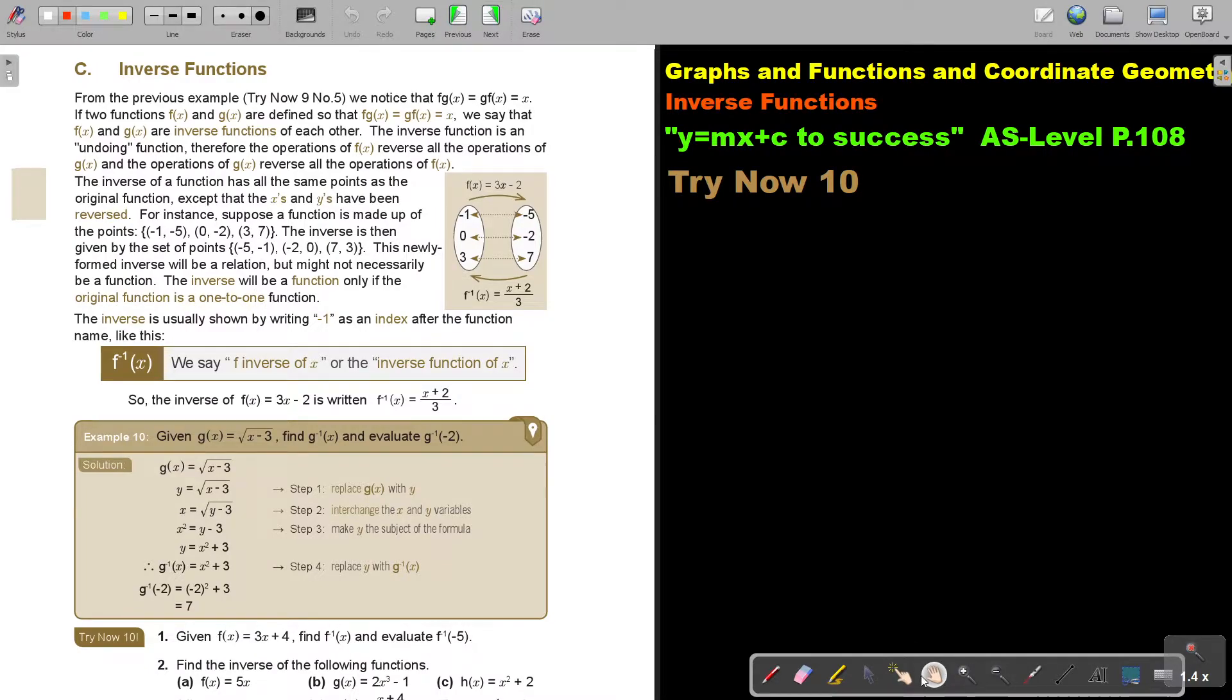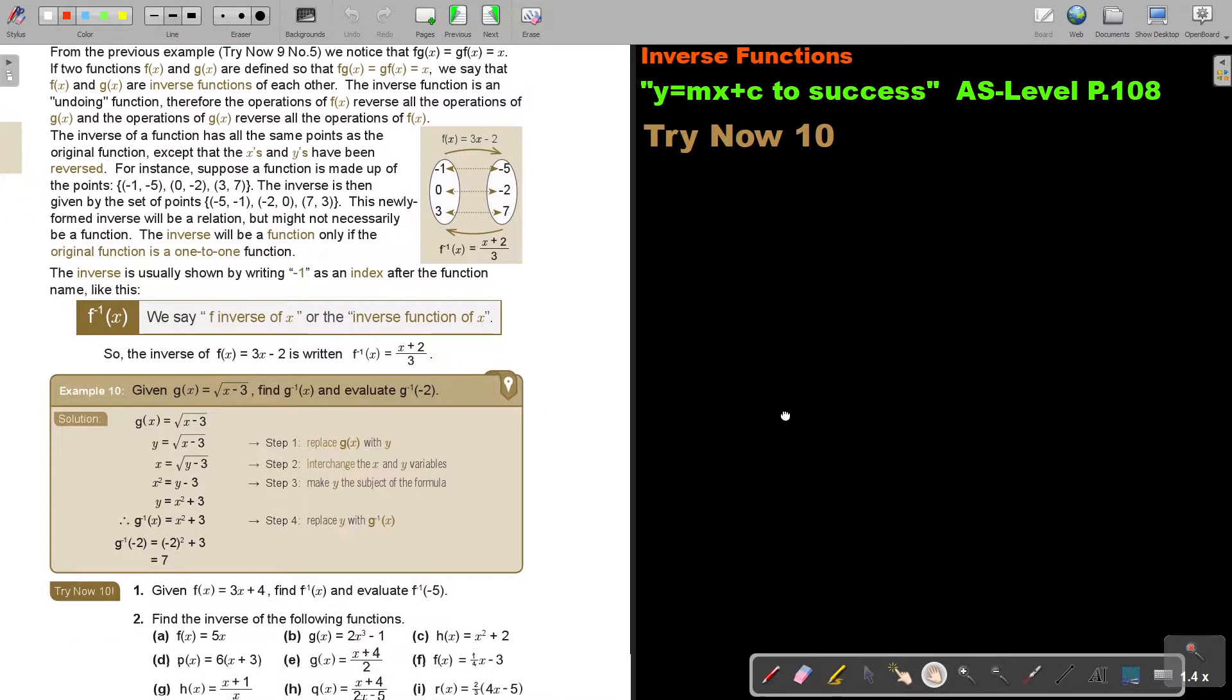The inverse is usually shown by writing a negative one as an index after the function name, like this. Do you see the negative one there? We say F inverse of X, or the inverse function of X. So, these two will be inverse functions. Let's look at an example. We also did it in ordinary level. So, the inverse of this is written as this. If G(X) is this, find G minus 1 of X, or the inverse function of X.